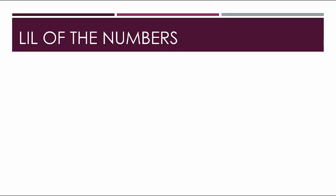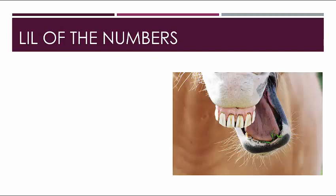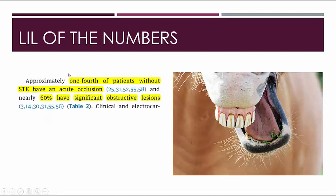Right from the AHA guideline: one-fourth of patients without STEMI have an acute occlusion, and nearly 60% of them have significant obstructive disease when you look at them under catheterization. Even if you don't have ST segment elevation on your EKG, if you take these patients into the cath lab, a quarter will have an acute occlusion — likely a thrombosis — and nearly 60% will have a significant obstruction blocking flow to the ventricles.